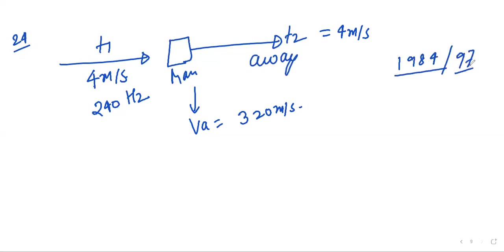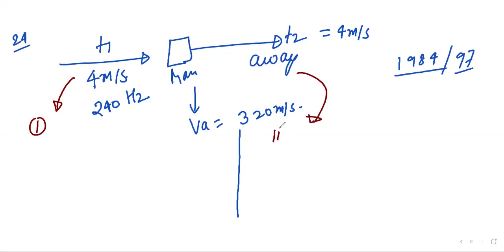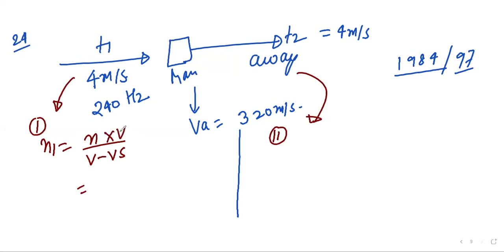Use the Doppler effect for two cases. For the approaching train: n₁ = n × v / (v − v_s). For the receding train: n₂ = n × v / (v + v_s). When approaching, frequency is higher; when moving away, frequency is lower.